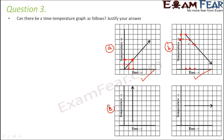Graph C shows temperature increasing while time remains constant. But nobody can stop time — time will keep on increasing and cannot remain constant. Therefore this is not a feasible graph and is not possible.